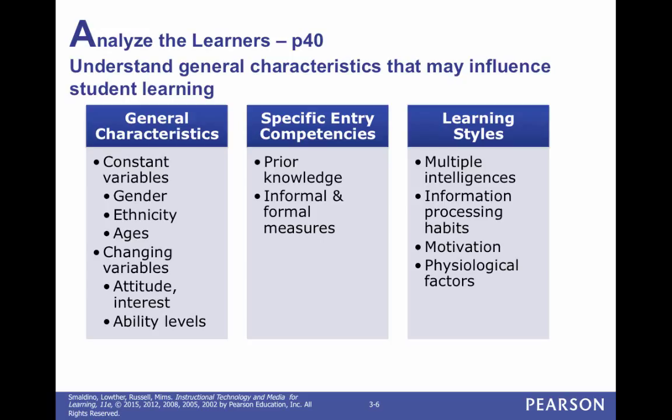Go to page 40. The first step is A — Analyze the Learners. Understand the general characteristics that may influence student learners. The general characteristics are the constant variables — things that never change: the gender of the students, the ethnicity, and the age of students in the classroom. But there are also changing variables: ability levels, since students of the same age may have different ability levels and reading levels, and also attitude and interest. These can change from student to student and group to group.